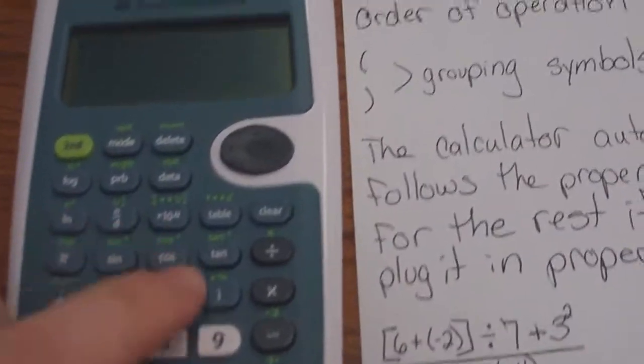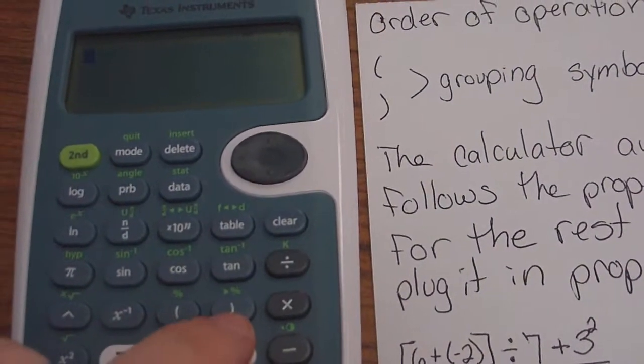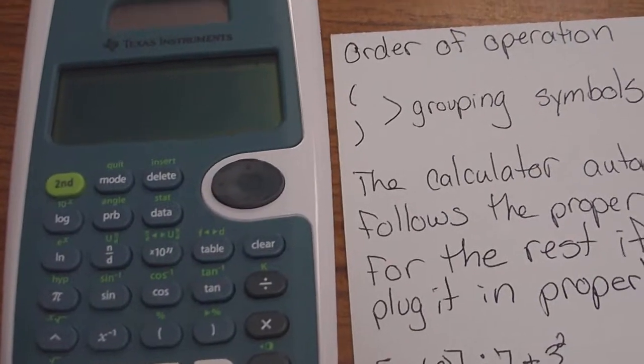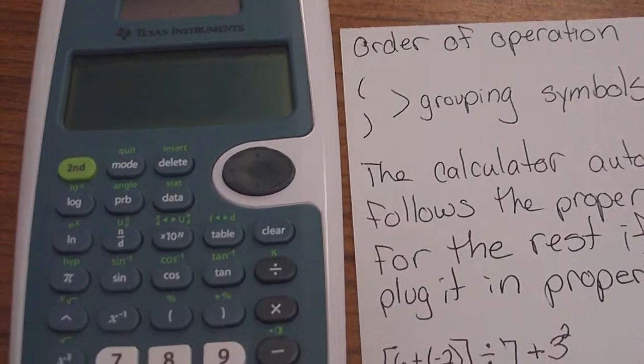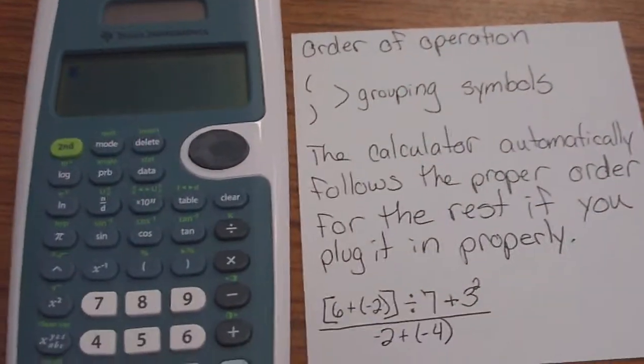The only thing you'll notice is there's parentheses on it. There's the open, there's the close. That's so that it knows it needs to do that first, okay? So the calculator's going to follow the general order of operations if you plug everything in correctly.